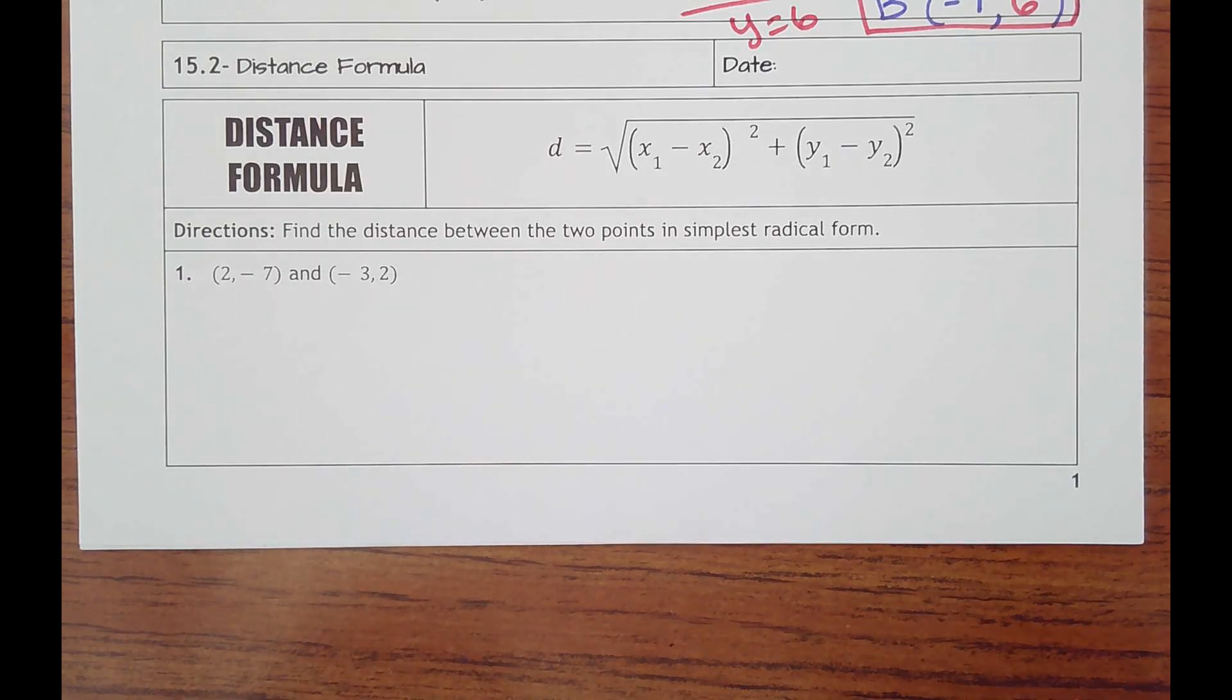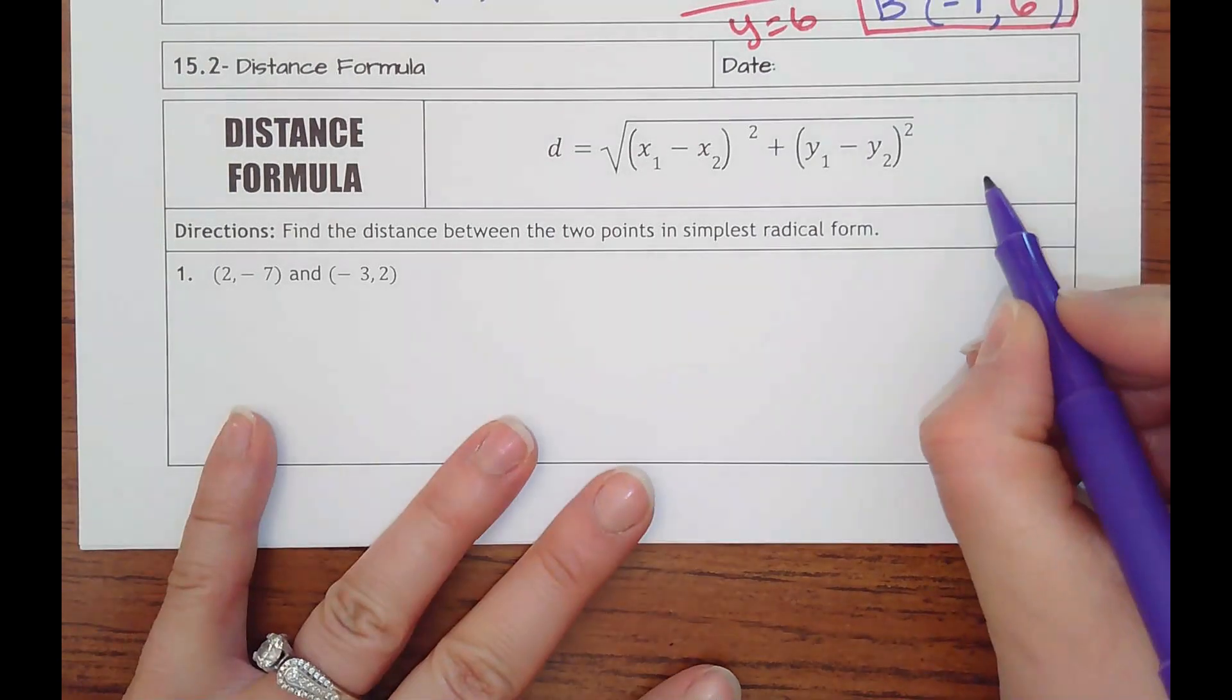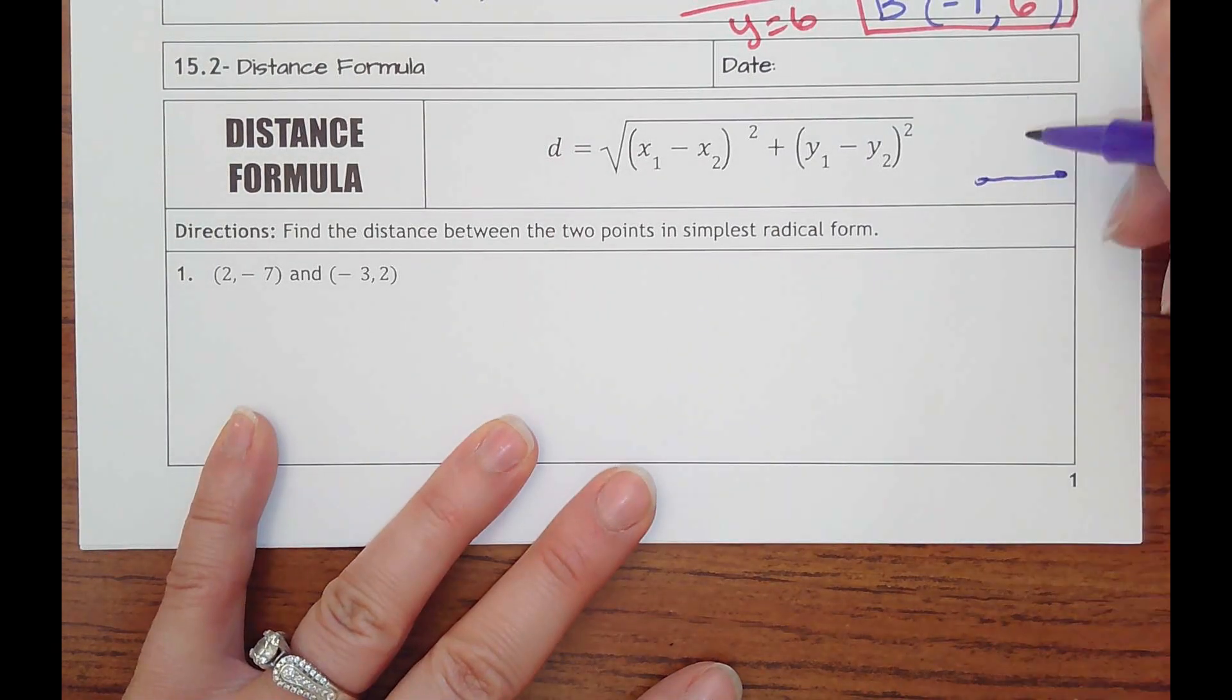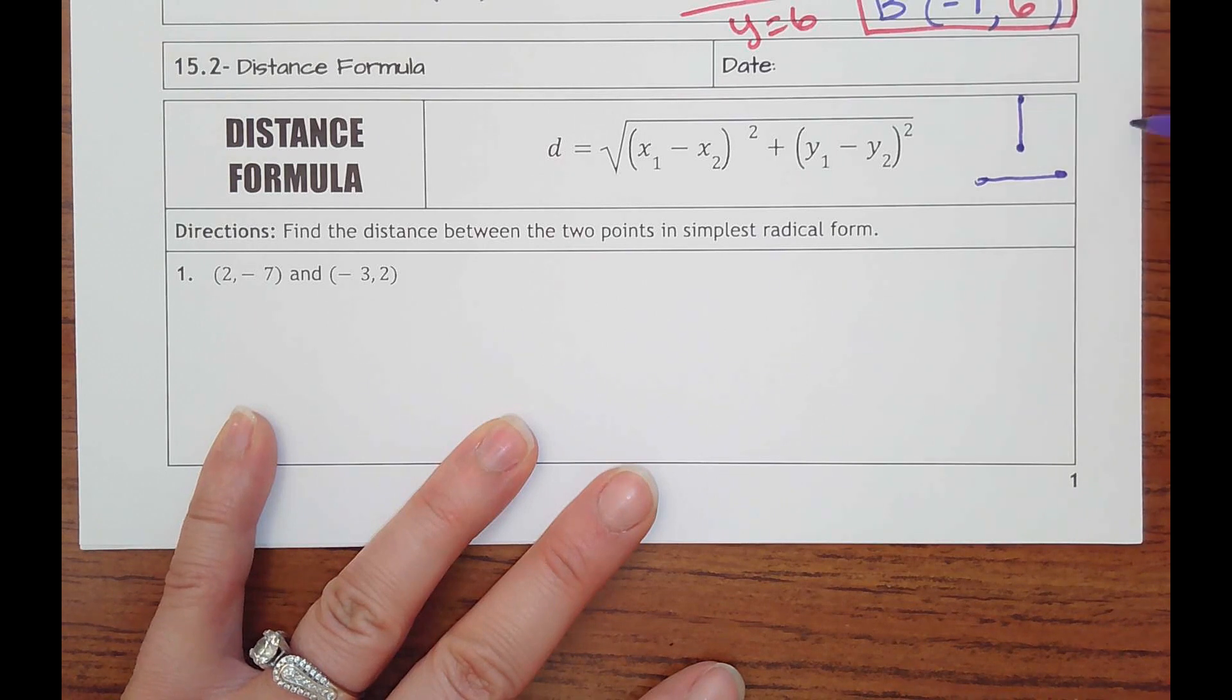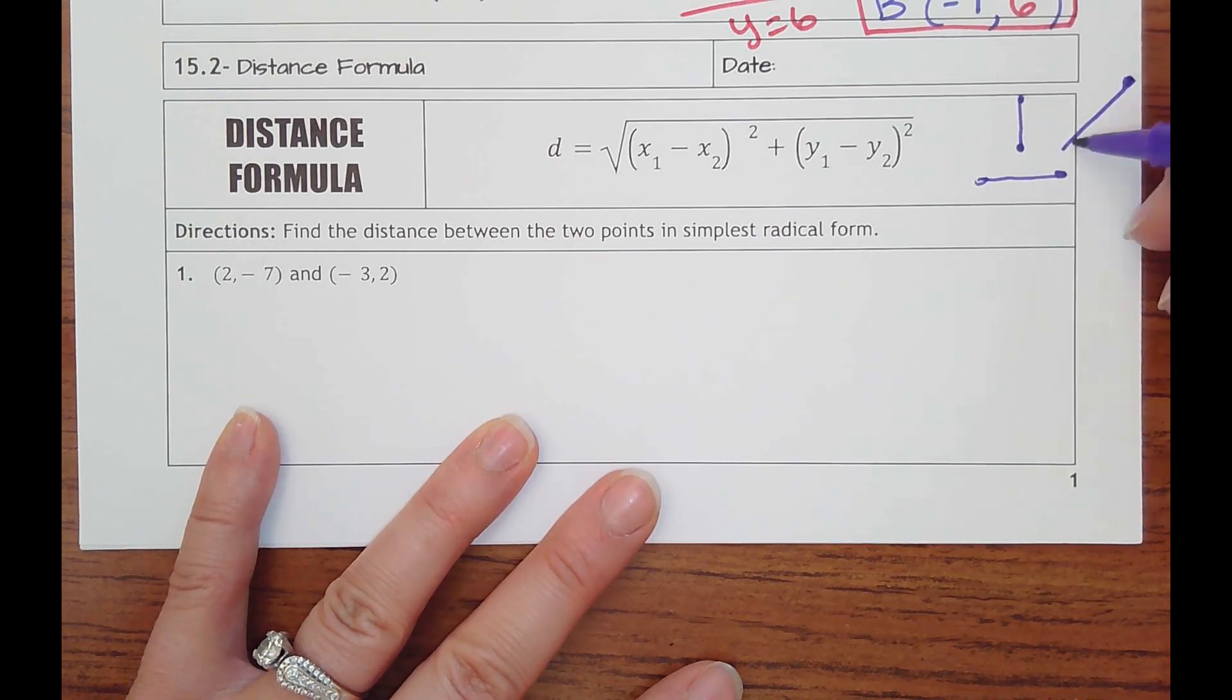Lesson 15.2 is called distance formula. Distances are easy to find if you have a horizontal line on a coordinate plane or a vertical line on a coordinate plane, but these are for finding something that's got a diagonal distance. That's hard to count.